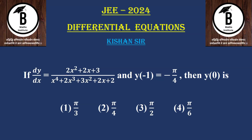If dy/dx is equal to (2x² + 2x + 3) / (x⁴ + 2x³ + 3x² + 2x + 2) and y(-1) = -π/4 is given, then y(0) हमको find करना है। इसको simplify करके जो value find करेंगे उसमें y की जगह minus 1 put करें तो वो answer मिलना चाहिए, और तब y = 0 put करने पर क्या मिलता है वो check करना है।